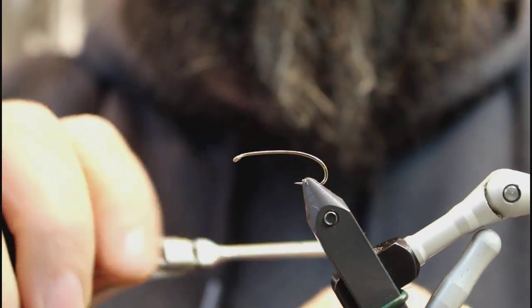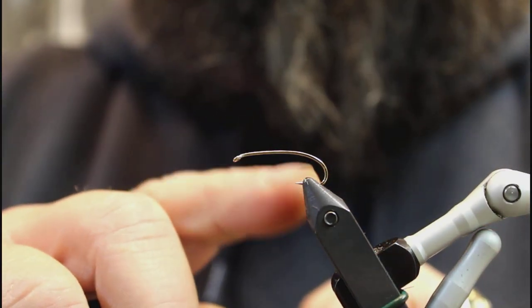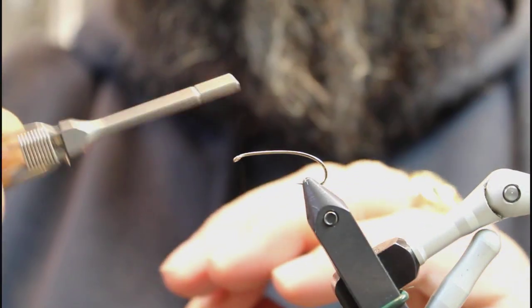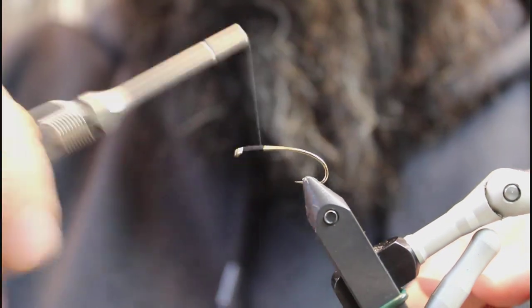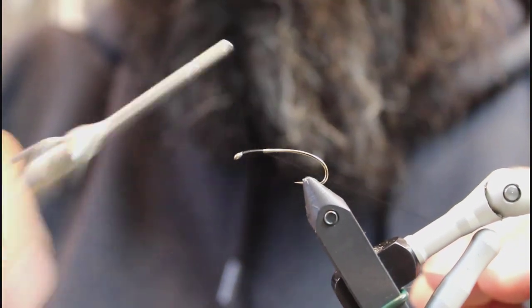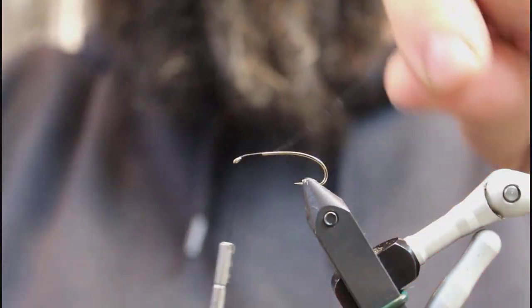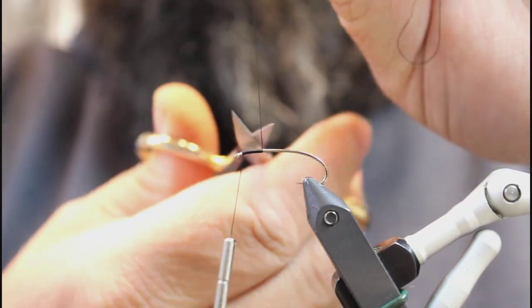I'm going to start here. I've got a 2X size 8 hook here, so this one is going to be on the small side. We'll lay down our thread base, going about a quarter of an inch behind the eye here, cut this off.